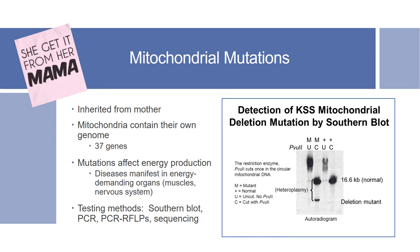Mitochondrial mutations are passed down from the mother. Mitochondria contain their own genome with 37 genes, and mutations in the mitochondrial genome affect energy production. These mutations often manifest in energy-demanding organs like muscles and the nervous system. An example is Kearns-Sayre syndrome. You can see a Southern blot demonstrating a mitochondrial deletion mutation in the image. Besides Southern blot, PCR, PCR-RFLPs, and sequencing can also be used to detect mitochondrial mutations.